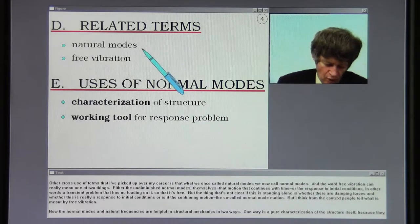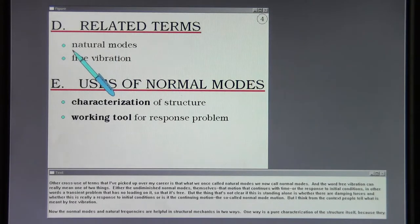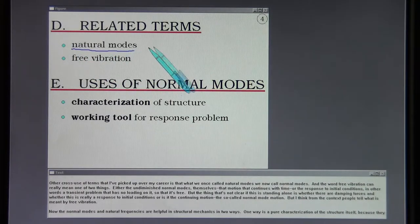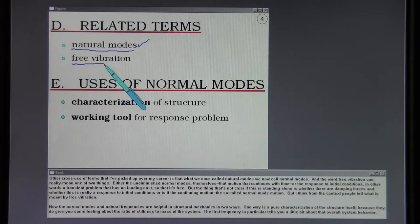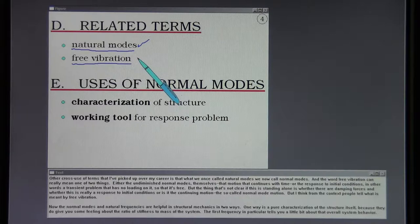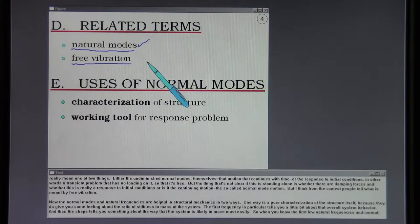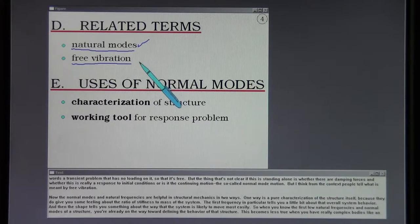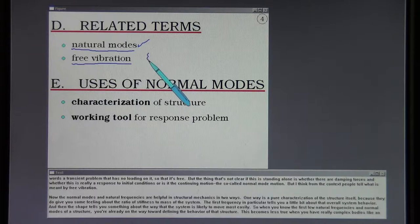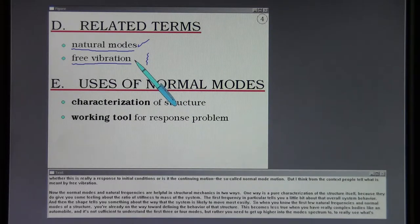Other cross use of terms that I've picked up over my career is that what we once called natural modes we now call normal modes. And the word free vibration can really mean one of two things: either the undiminished normal modes themselves, that motion that continues with time, or the response to initial conditions, a transient problem that has no loading on it. But the thing that's not clear is whether there are damping forces and whether this is really a response to initial conditions or the continuing motion, the so-called normal mode motion. But I think from the context people tell what is meant by free vibration.